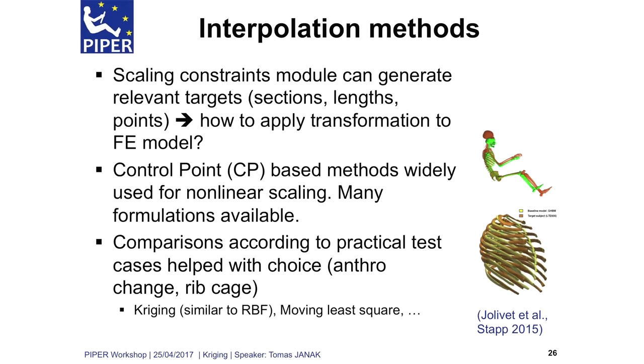Everyone has told you how we get all those targets, and I will talk a little bit about the actual interpolation method that we are using under the hood to get the final position for all those points. On the input we have some control points — some meaningful points on the mesh, just a few of them. We have some target positions for them that define our nonlinear deformation, but now we need to interpolate this deformation for all the points of the human body model to get the scaled model.